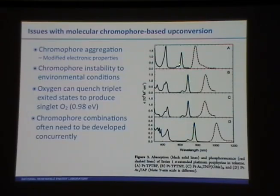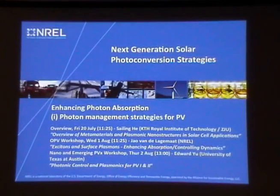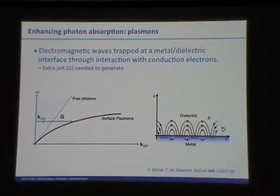The final example is developing chromophore combinations. We have a series of porphyrins where the energetics are tuned. As you tune the singlet energy — the red curves correspond to emission from the triplet excited state — you change the energetics by changing the molecular structure, and that means you need to choose the appropriate acceptor for a given sensitizer. Finally, I'll discuss very briefly strategies for managing photons in PV devices. There are a number of talks on plasmonic and photonic structures in PV throughout the summer school, so I'll give you a quick overview of some of those.